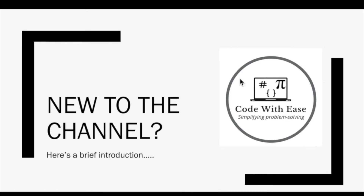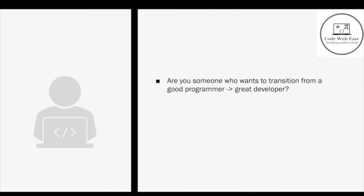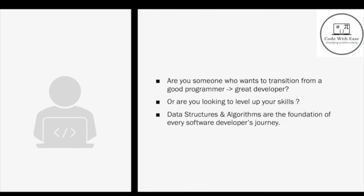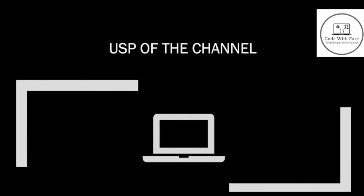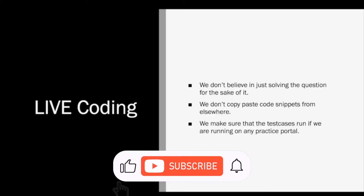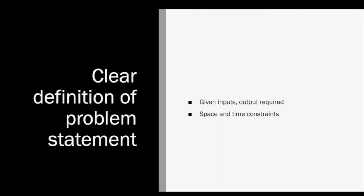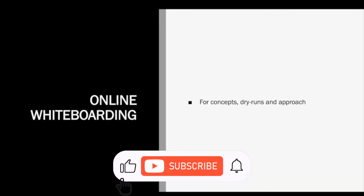Here's a brief introduction for those new to the channel. The objective of Code with Ease is to make problem solving in programming simpler. If you want to become a great developer and level up your skills, data structures and algorithms are indispensable. We post topic-wise video explanations in Java on coding interview questions that help crack coding interviews and improve problem-solving abilities. We code every solution live — no copy-pasted snippets. We start by defining the problem statement, inputs, output, and complexities, discuss the brute force approach first, and then move to the optimal solution using online whiteboarding.